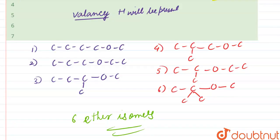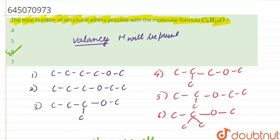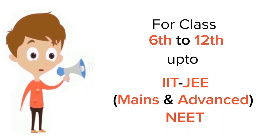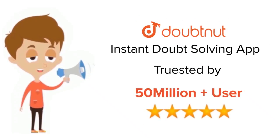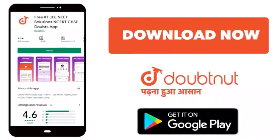So our answer is six, which is option number C. For class 6 to 12, IIT-JEE and NEET level, trusted by more than 5 crore students. Download Doubtnet app today.